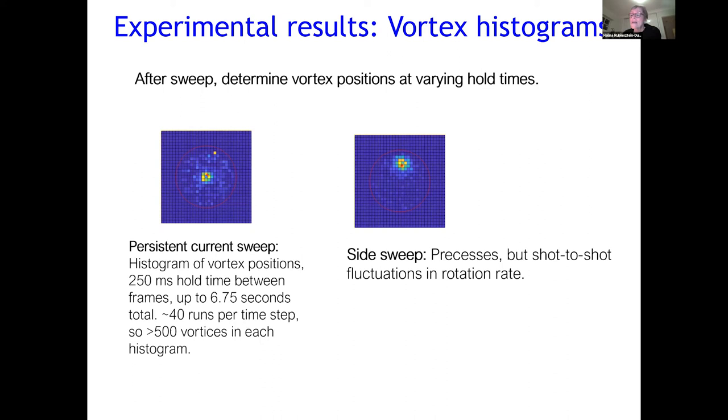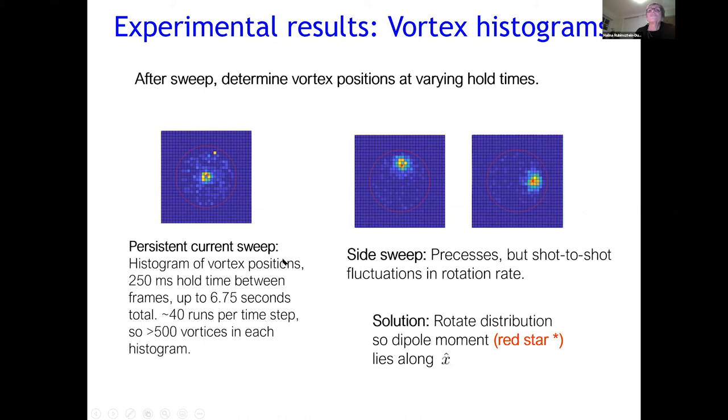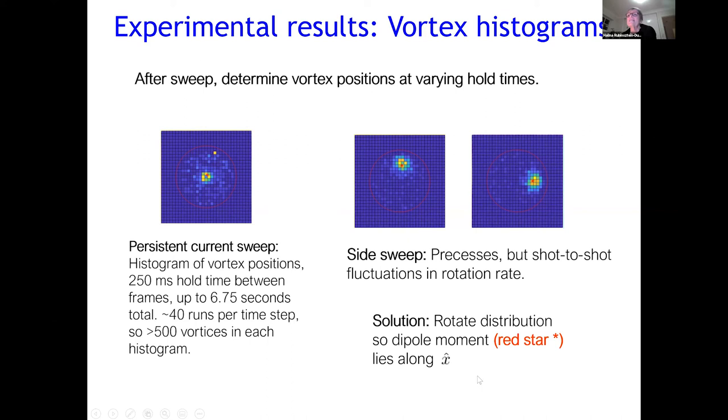And I show you here, the final slide, which is showing you the after sweep of vortex histograms. So you can see here that I have a histogram of vortex position here in the middle. And then side sweep gives me this rotating chiral vortices. And with that, I will thank you for your attention.